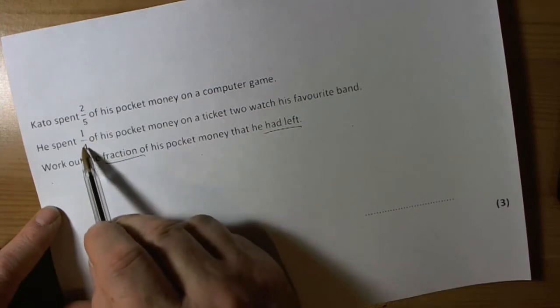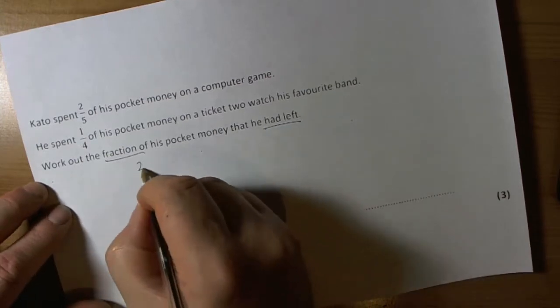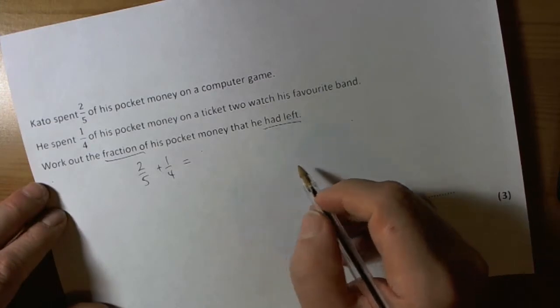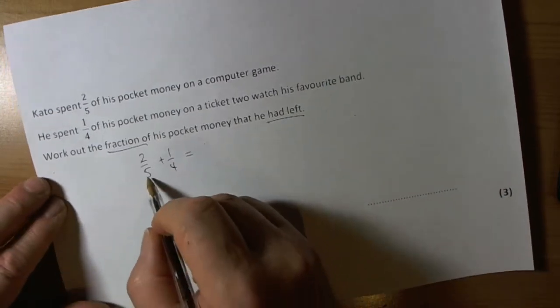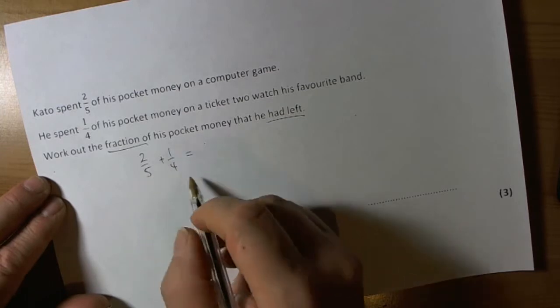So we've got two-fifths spent on a computer game, and a quarter spent on a ticket to watch his favourite band. So if we add two-fifths and one-quarter, that will tell us the fraction of his money that he's spent so far. Now when we're adding fractions, we need to remember we need a common denominator to make that work for us.